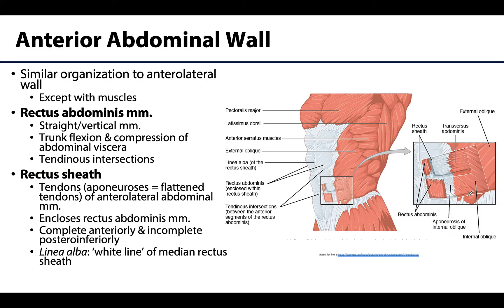Moving to the anterior wall, the layers are very similar to the anterior lateral wall, but the biggest difference is the muscles present and the very dominant rectus sheath. Instead of three layers of muscles, there is one dominant muscle in this region: the rectus abdominis. These are paired, parallel, very long and straight muscles extending all the way from the xiphoid process down to the pubic symphysis. Interspersed throughout the muscle are tendinous intersections that attach to the anterior rectus sheath.